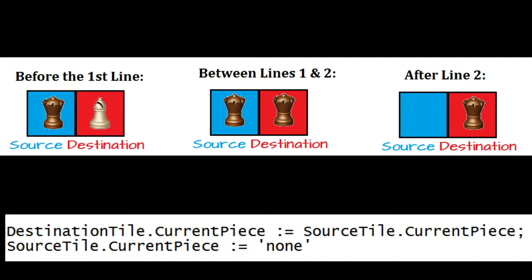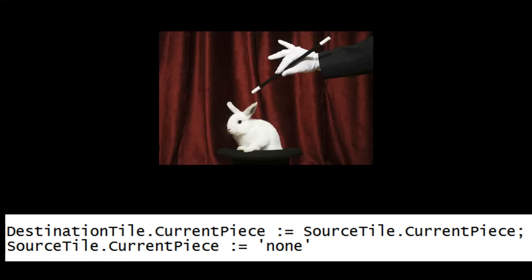So the first line could be read as, hey, destination tile, the only piece you need to remember now is whatever one the source tile is currently remembering. In the instant after the first line of code has happened, but before the second line happens, destination tile and source tile are both storing the same piece. Destination tile has forgotten whatever piece it used to know about. That piece has been squashed to dust, or maybe destination tile was empty before. It no longer knows or cares. The second line of code says, hey, source tile, the only piece you need to know about now is none. When that code happens, the magic trick is complete. The white bishop or black queen or whatever seems to have moved from one tile to another.